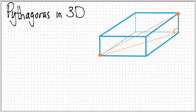If we know this distance along the bottom and then this distance up the side, then we can use Pythagoras' theorem to actually find that distance that we were asked to find.